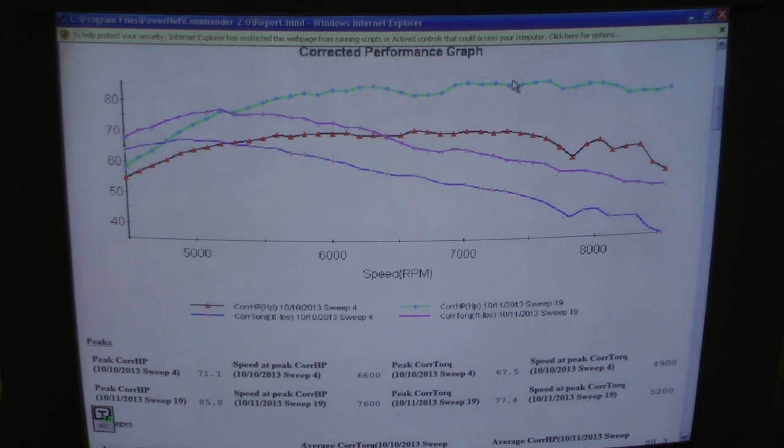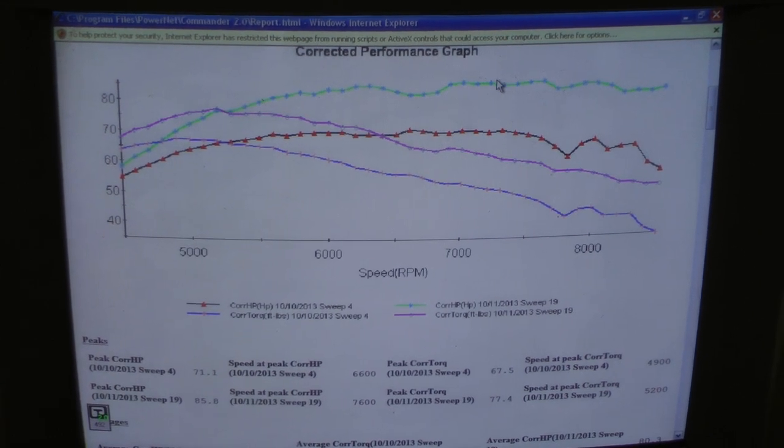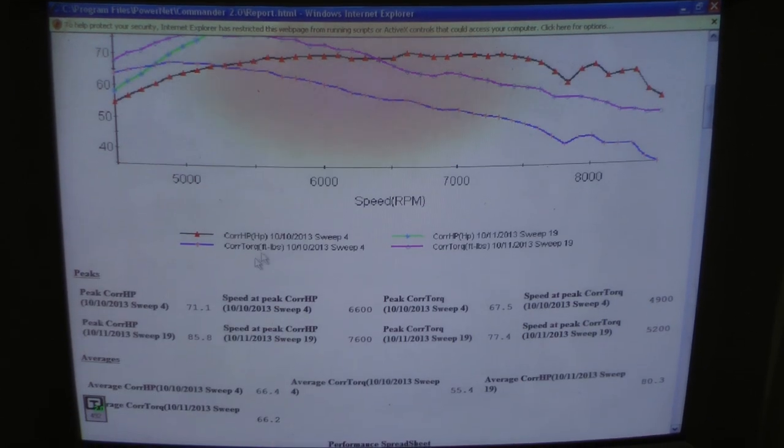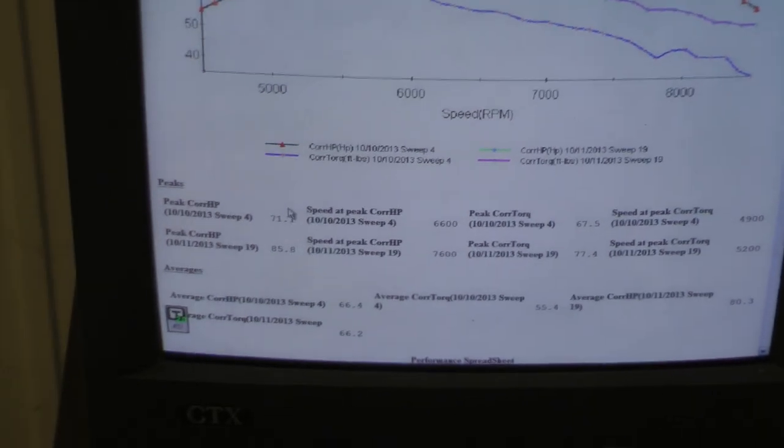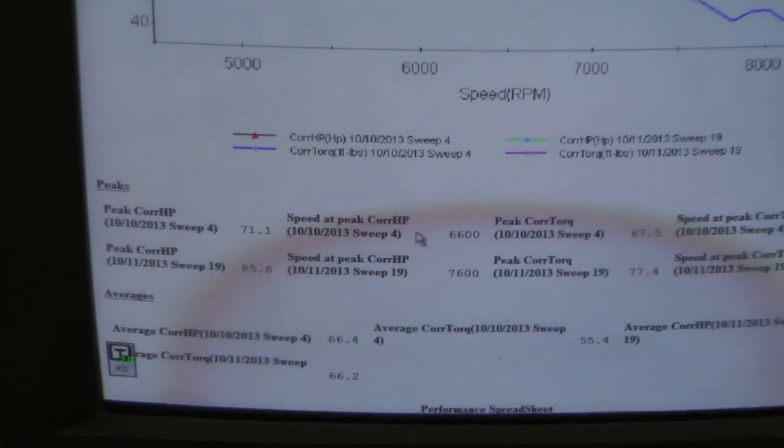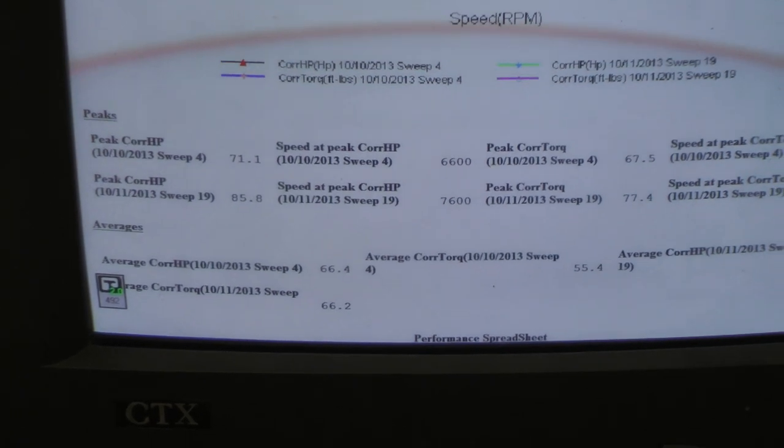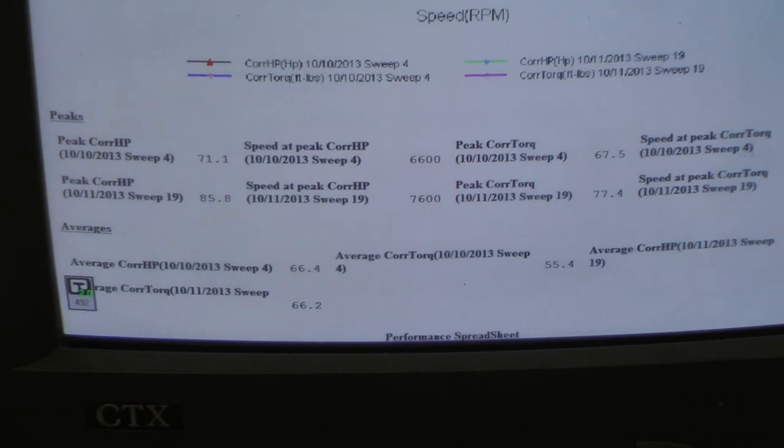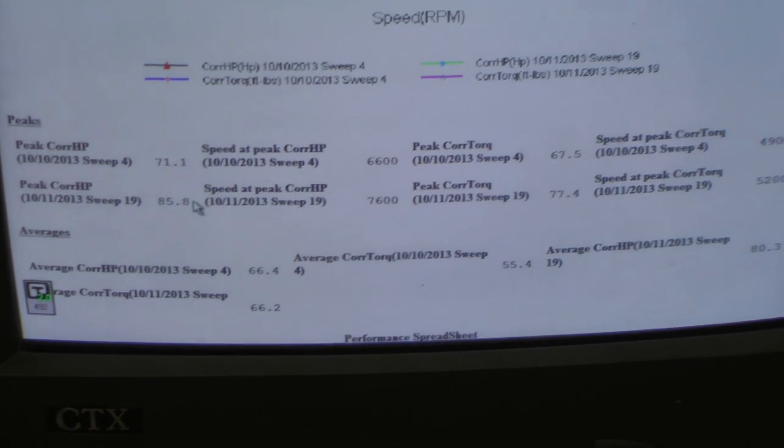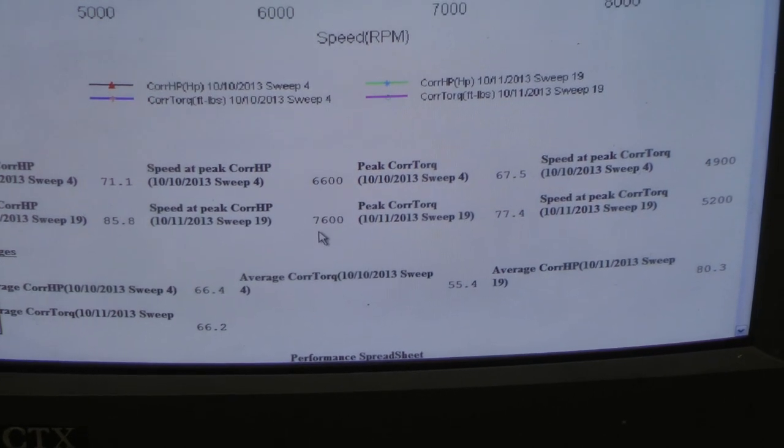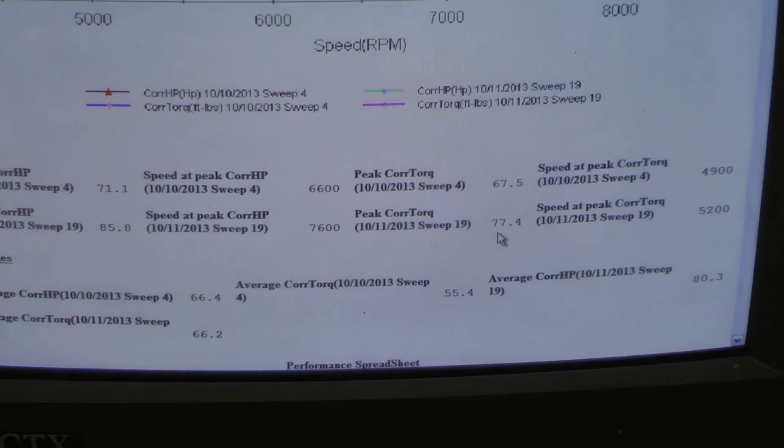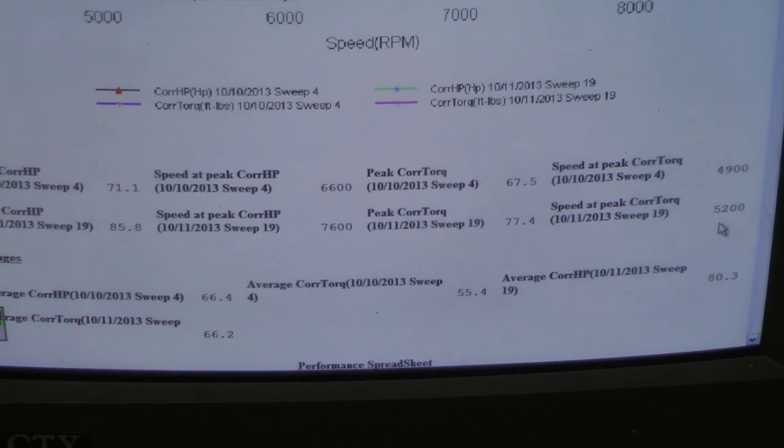All we did is change the intake, reset the carburetor to adapt the intake to it to make it work right. And here it is, the horsepower. The two barrel intake made 71.1 horse at 6,600 RPM, 67.5 foot pounds of torque at 4,900 RPM. The Midwest Super Cub intake made 85.8 horse at 7,600 RPM and 77.4 foot pounds of torque at 5,200.